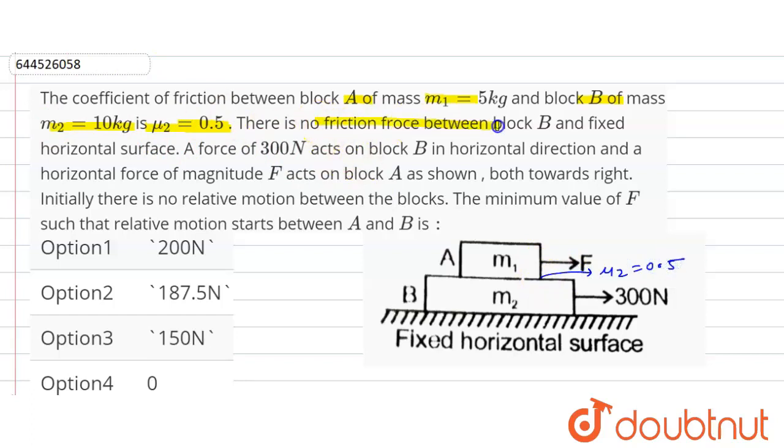There is no friction force between block B and the fixed horizontal surface. This is a smooth surface, so here mu is equal to 0, no frictional force is here.